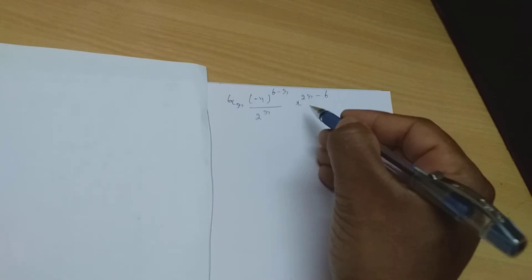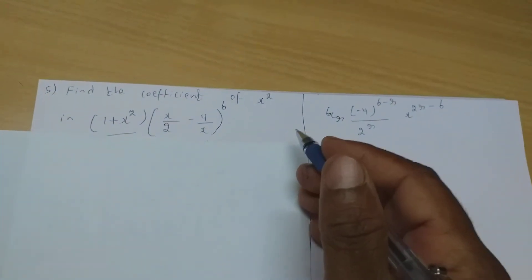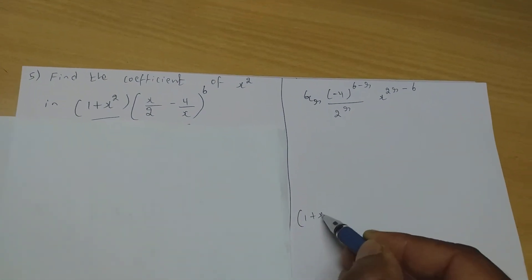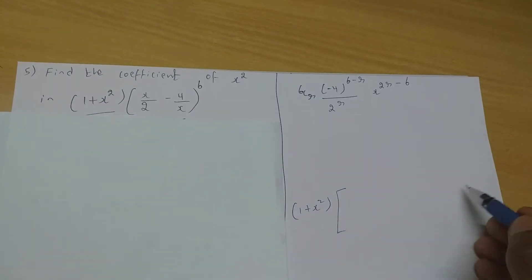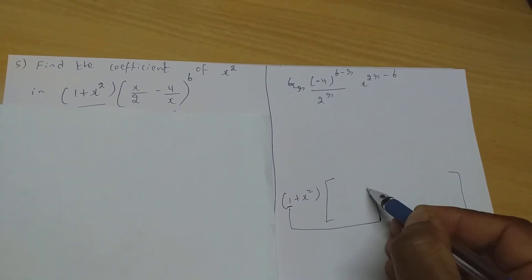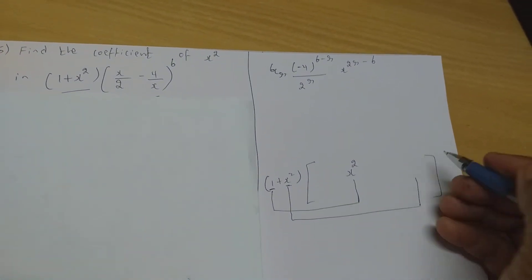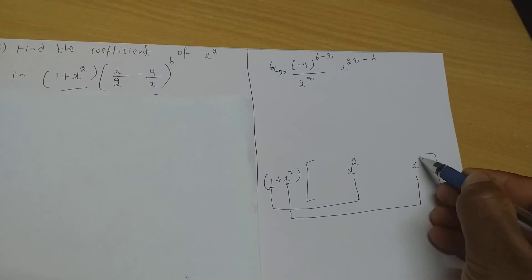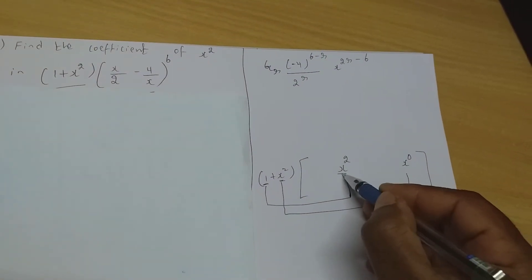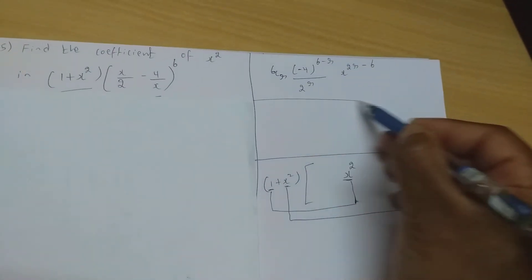The general term becomes 6Cr · (−4)^(6−r) / 2^r · x^(2r−6). The expression is (1 + x²) × expansion, so I need: 1 multiplied with x² to get x², and x² multiplied with x⁰ to get x². I need the coefficients of x² and x⁰ from this general term.